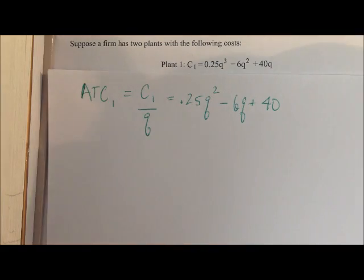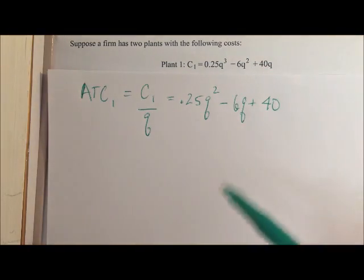And this relationship isn't at all unique to costs. This is just simply how we define any type of average. It's the total of whatever it is you're adding up divided by the quantity. So our average total costs are our total cost divided by quantity, which gives us this function here.